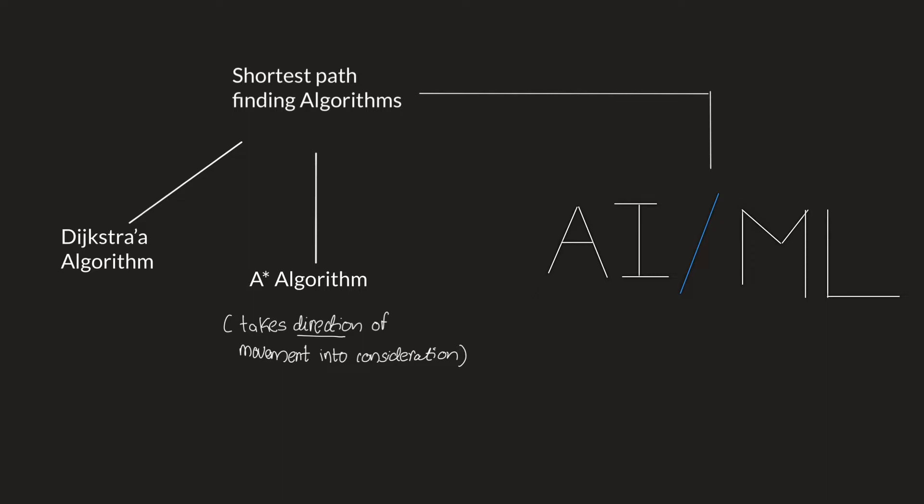In A-levels, we have two shortest pathfinding algorithms. The first is Dijkstra's algorithm, and the second is A-star algorithm. A-star algorithm is told to be the better one, or the smarter one, because it takes direction of movement into consideration. So, every direction you move to can have a particular cost, which we will calculate when we calculate the final cost of moving at that path.